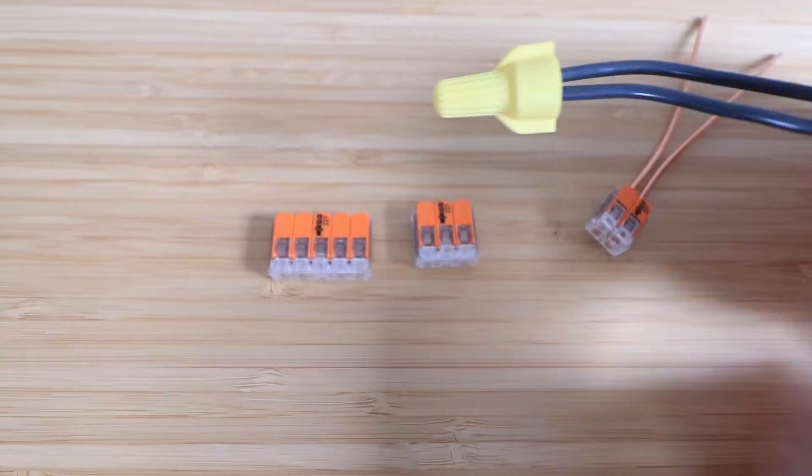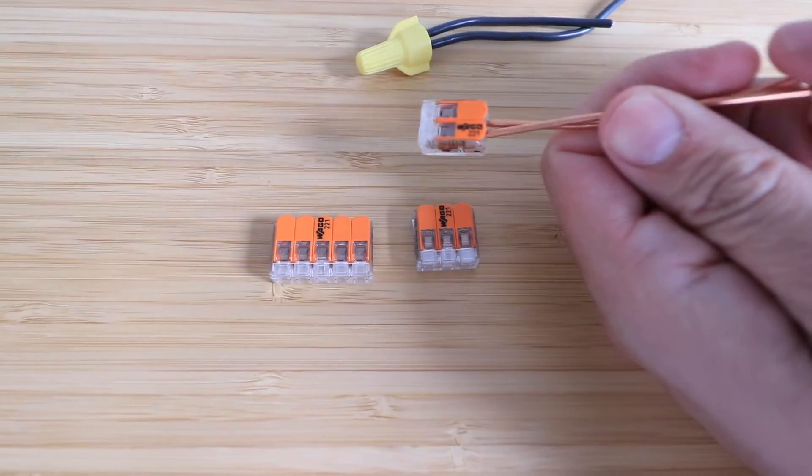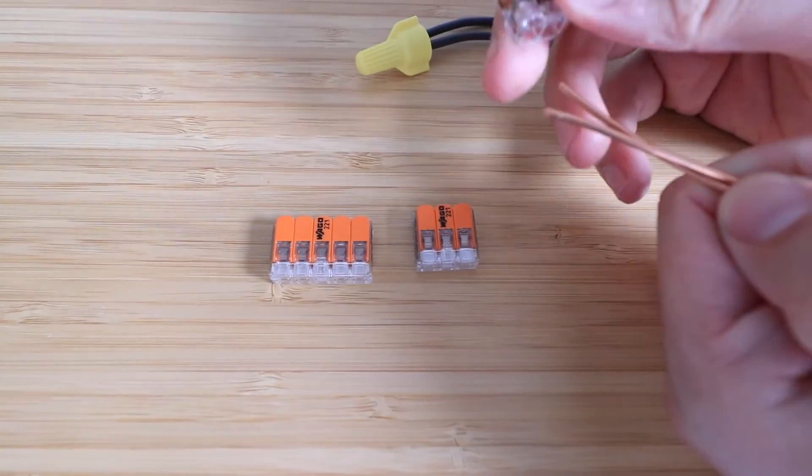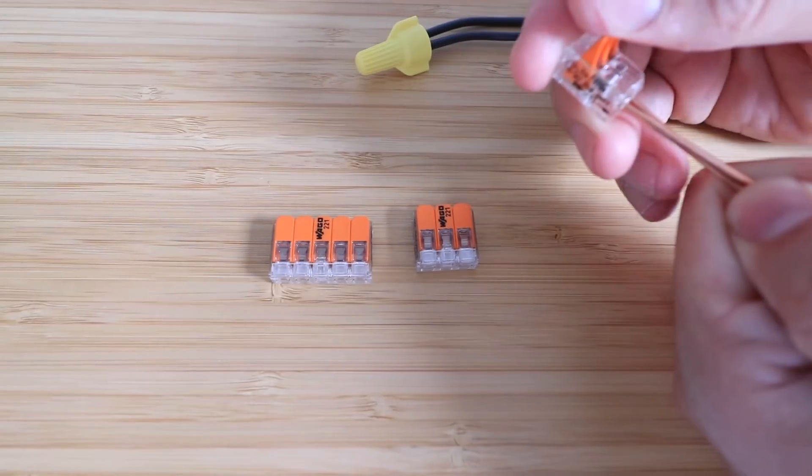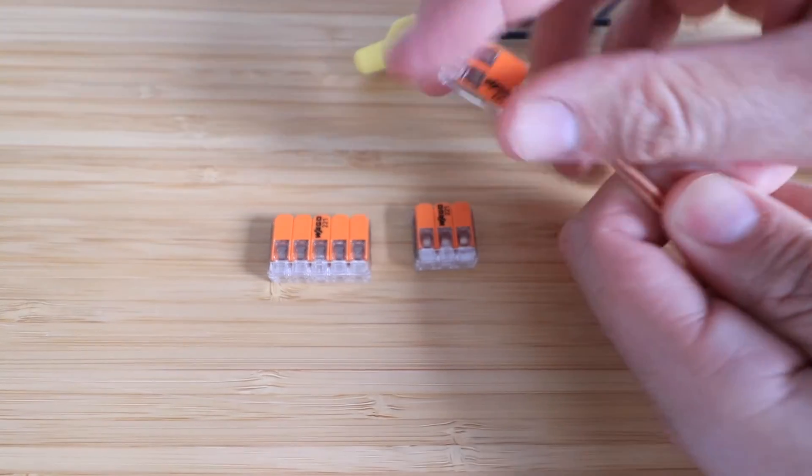But my favorite part of the Wago is that once you want to disconnect this, or maybe you've got to disconnect it for some reason, you just flip these open, take it off, and you're good to go. So look how fast that is to put them in, and you flip the levers down, and you're ready to go.